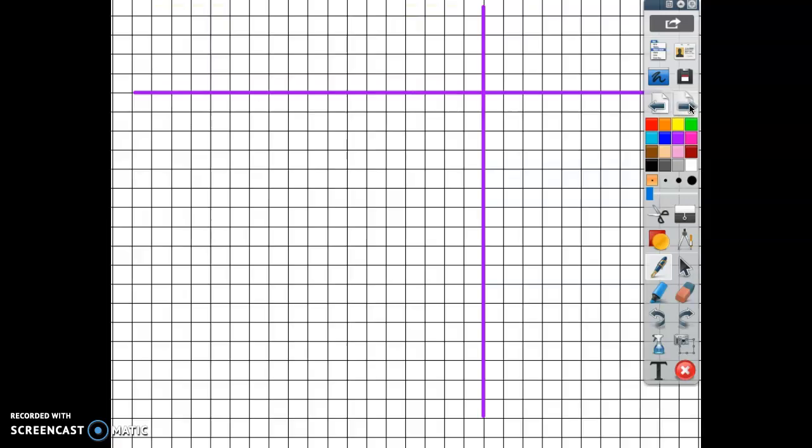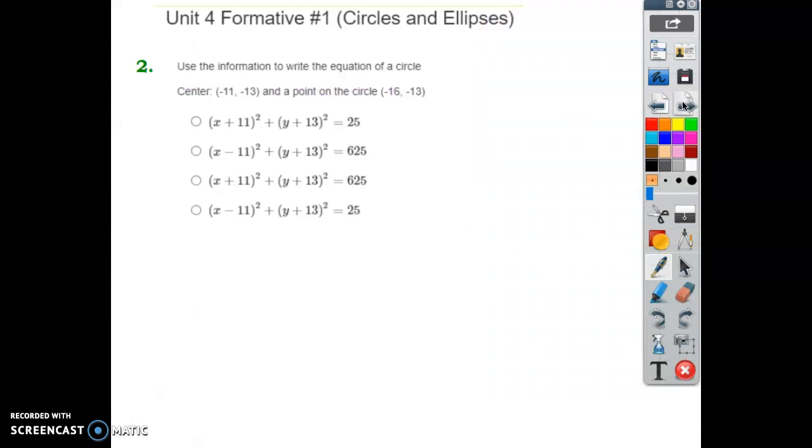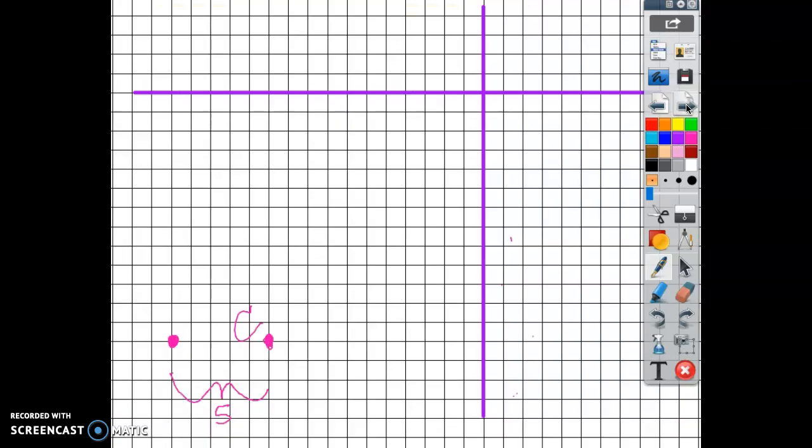So I'm going to go ahead and plot the center just to show you. If I graph the center at negative 11, negative 13, and I graph the other point, when you say a point's on the circle, that means it's on the circle. Terrible circle, but you get the point. This is something you learned in geometry, it's just been a while. So the radius can be found, it's this distance here. You can just take the x coordinates and subtract them, get the difference between the two. So the radius is 5.